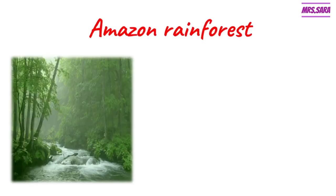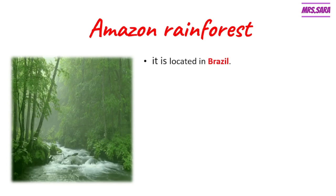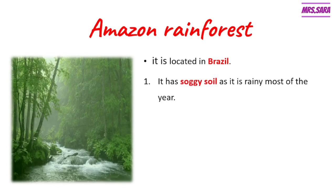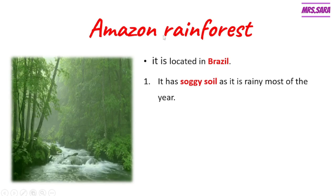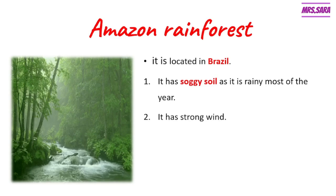Now we're going to talk about another place called Amazon Rainforest. Amazon Rainforest is located in Brazil. Amazon Rainforest has something called soggy soil — that means the soil has lots of water. Why? Because it rains most of the year, so we call it Amazon Rainforest. The forest has lots of trees. Amazon Rainforest has soggy soil as it rains most of the year. It also has strong wind.